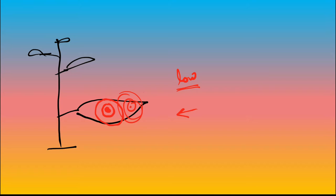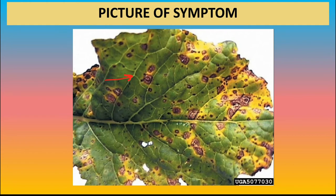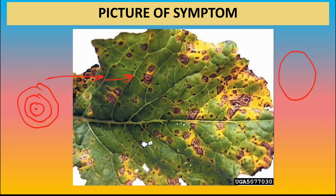बाद में यह धीरे-धीरे concentric rings बनाते हैं और ऐसी बहुत सारे spots आपस में जुड़ने लगते हैं और leaf का बहुत सारा area cover हो जाता है, जिसके कारण से पौधे की पत्तियों में photosynthesis rate बहुत कम हो जाता है और ऐसे पत्ते समय से पहले गिर जाते हैं। ऐसे ही symptoms stems और pods में भी आते हैं, लेकिन यहाँ पर जो symptom होते हैं वो elongated होते हैं। अगर infection बहुत ज्यादा मात्रा में हुआ है तो seeds कम बनते हैं और जो भी seeds बनते हैं वो shriveled होते हैं। यह Alternaria की property है कि यह concentric rings बनाता है।